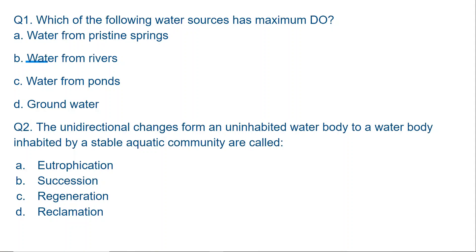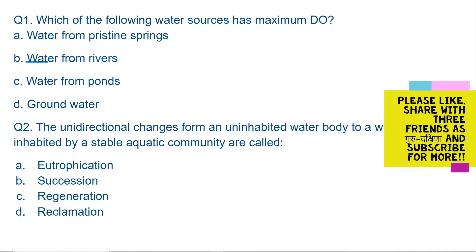The correct answer is A — pristine springs. In Hindi: Which water source has the highest dissolved oxygen? Pristine springs are those springs which have not had any human intervention — they are found in jungles, undisturbed. Because pristine springs which have not been disturbed by humans are totally pure and they are in constant motion.